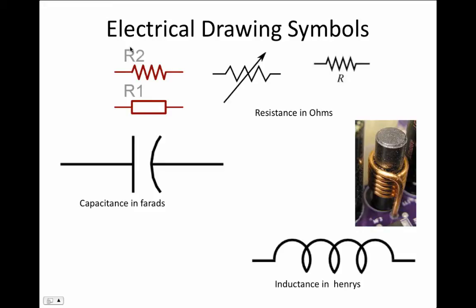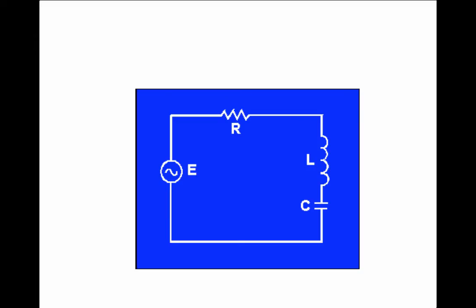Certain symbols are used in electrical circuits. We've already talked about a voltage source, a battery, and a resistor as a load. Here's what a resistor looks like in a schematic, and here's a capacitor — we won't worry about that, it's more used in AC circuits — and an inductor. You can almost create any kind of electrical device out of these three circuit elements. A circuit might have an AC voltage source, resistance, inductance, and capacitance.